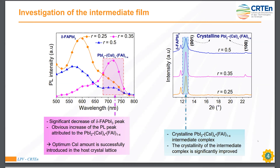This result was confirmed by room-temperature photoluminescence measurements. We can see that for a ratio of 0.35 we obtain a crystalline phase around 730 nm. Based on these results, we can conclude that there is a significant decrease of the secondary phase FA-PbI3 peak and an obvious increase of the PL peak attributed to the crystalline phase of the intermediate complex. This means there is an optimum cesium iodide amount to obtain the crystalline phase of the perovskite material.